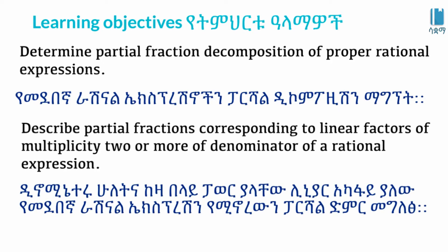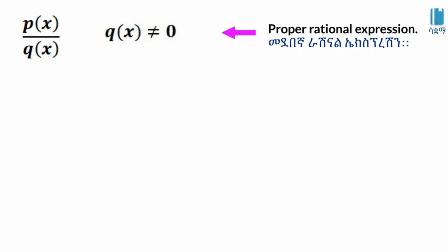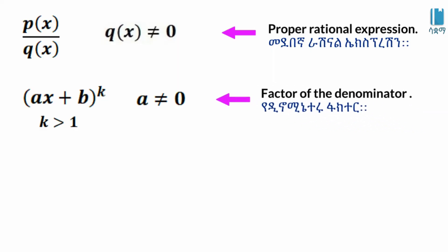This is the denominator of the linear factor. The linear factor is multiplicity. The power of k is greater than 1; when k is equal to 1, we have a single linear factor.